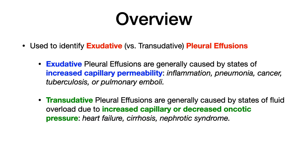In short, Light's criteria is used to identify an exudative pleural effusion. When we look at pleural effusions, we categorize them as either exudative or transudative. And if any of the Light's criteria are true, you have an exudative pleural effusion.